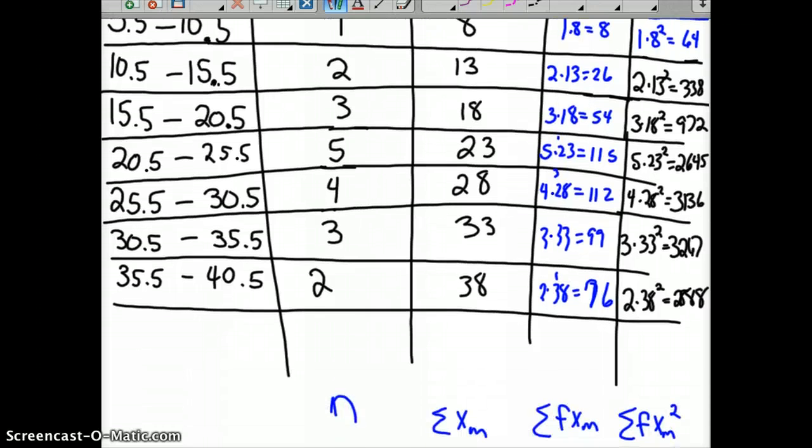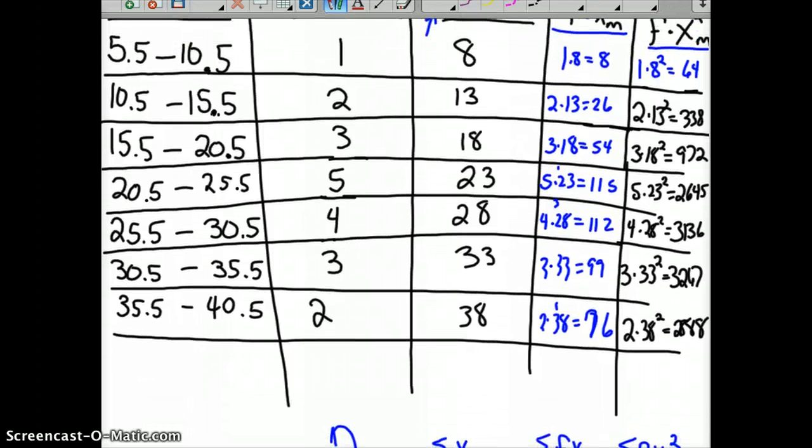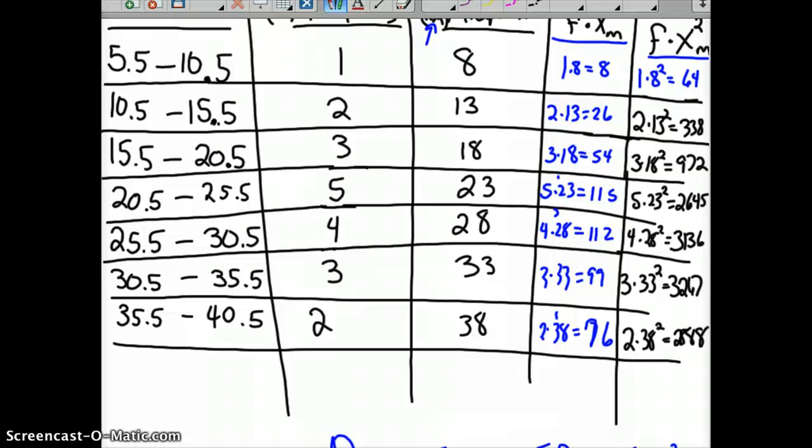Okay, so once you have all of those, you sum up the columns. So the sum of your frequencies, you add them all up, and you get 20. And then you sum up your f times your midpoint, your frequency times your midpoint column, and you get 490. And then you sum up your frequency times your x squared column, and you get 13,310, barring any mistakes on my part.